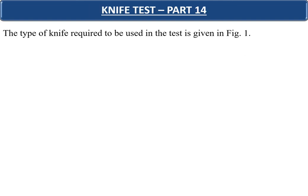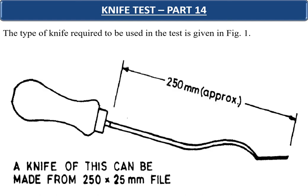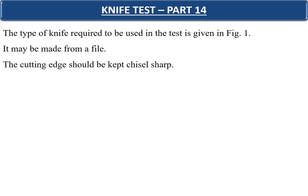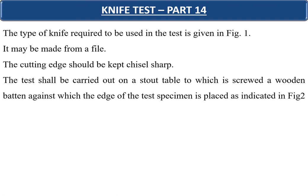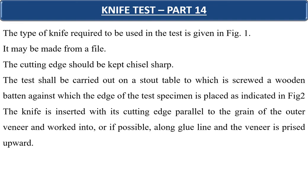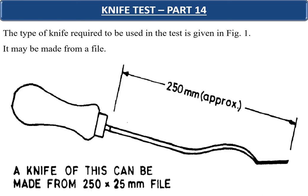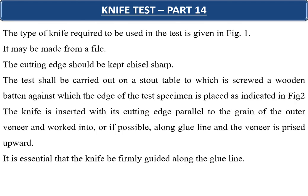Part 14 covers the knife test. The knife used can be made from a wooden file of 250 by 25 mm with a chisel-sharp cutting edge. The test is carried out on a stout table with a wooden batten against which the specimen edge is placed. The knife is inserted with its cutting edge parallel to the grain of the outer veneer and worked into or along the glue lines, with the veneer prised upwards. The knife must be firmly guided along the glue line.